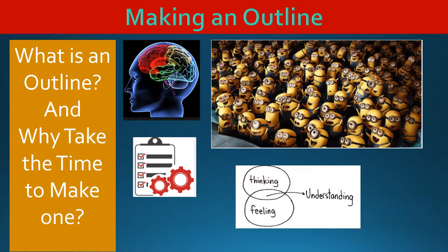an outline also provides directions that reduce the need for constant inspiration as writing proceeds. Why write one? It allows the scholar to experiment with the order of presentation. It accentuates the dominant features of the paper as the audience is likely to perceive them, and it also helps the scholar define and highlight the value of the work being written.